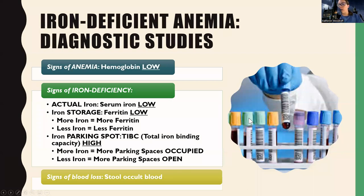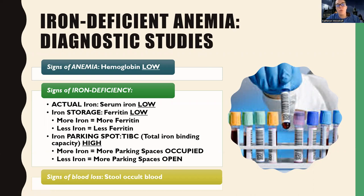It's really important when looking at anemias to look at diagnostic studies, because there are definitely going to be some questions on your exam about anemia labs — definitely make some flashcards. For iron deficient anemia, of course they're going to have signs of anemia and their hemoglobin will be decreased. But more important and specific to iron deficiency: there are going to be signs of iron deficiency. The actual iron level — serum iron — is going to be low.